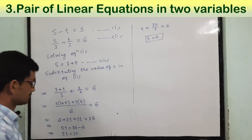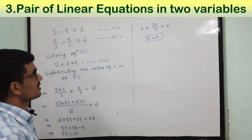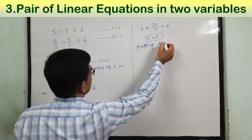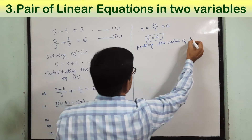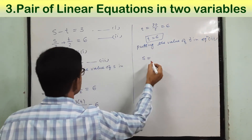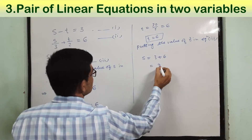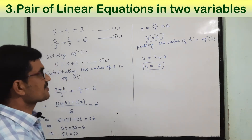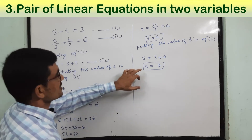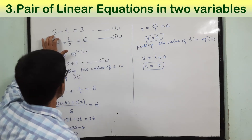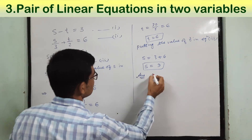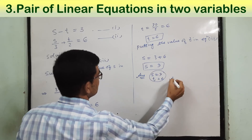So we got t equal to 6 — that is our first answer. Now we substitute the value of t in equation 3: s equals 3 plus 6, that is s equals 9. We can verify: putting s equal to 9 and t equal to 6, we get 9 minus 6 equal to 3, which is correct. So the answer is s equal to 9 and t equal to 6.